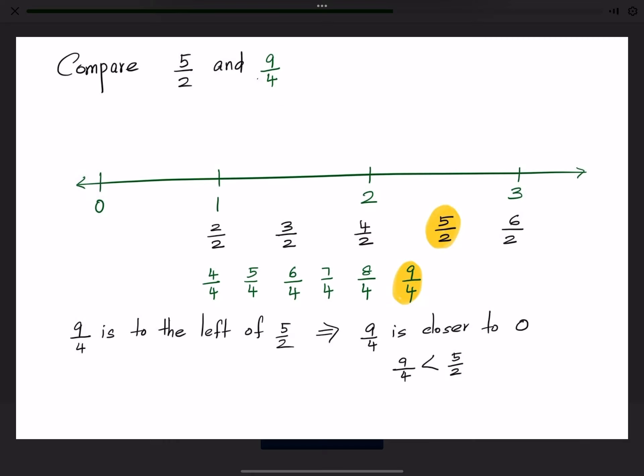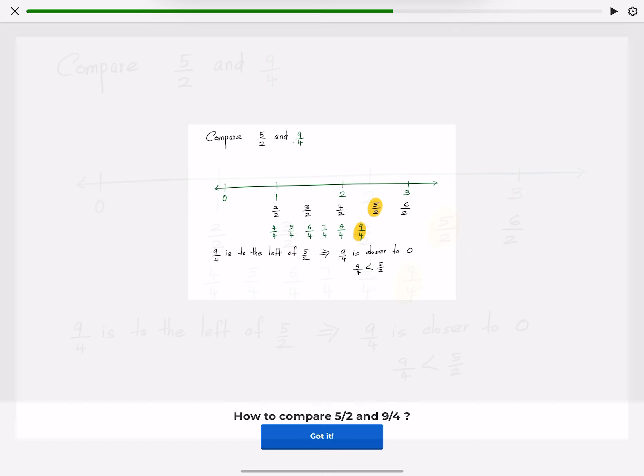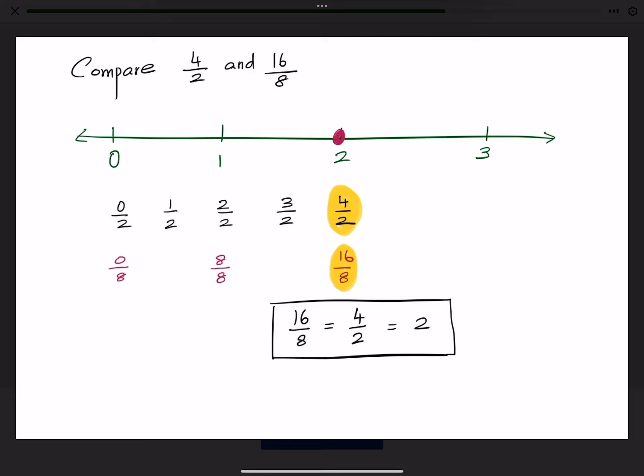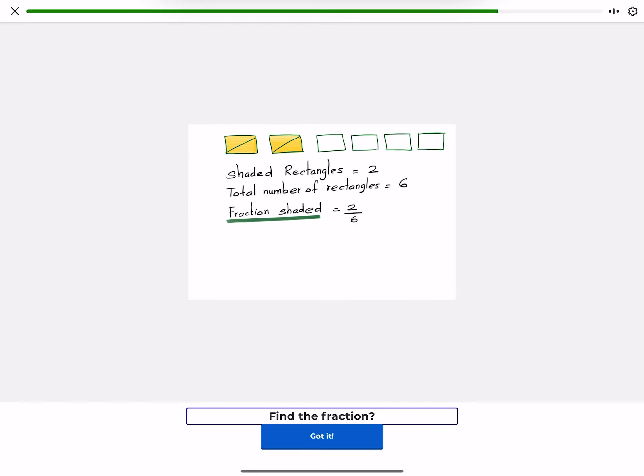How to compare 5 halves and 9 fourths? Do you know to compare 4 halves and 16 eighths using a number line? Find the fraction?